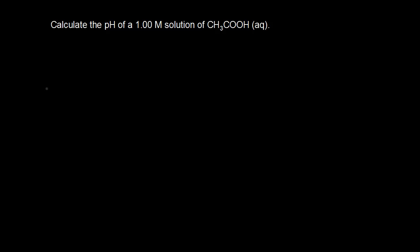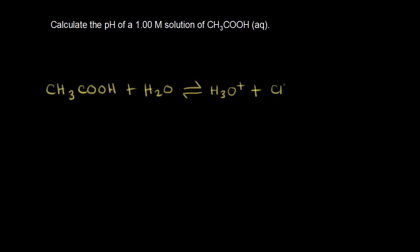The problem asks us to calculate the pH of a one molar solution of vinegar, which is acetic acid in water. Let's start by writing our acid-base reaction. We have acetic acid, CH3COOH, plus water. If acetic acid donates a proton to water, water turns into H3O+, the hydronium ion, and we also get the acetate anion, CH3COO-, the conjugate base to acetic acid.